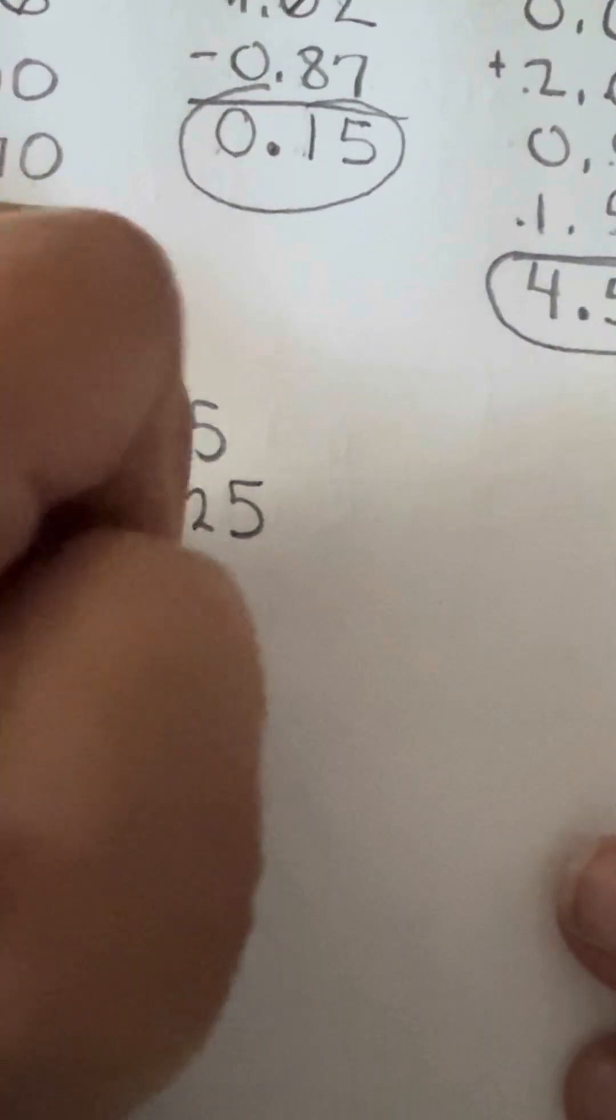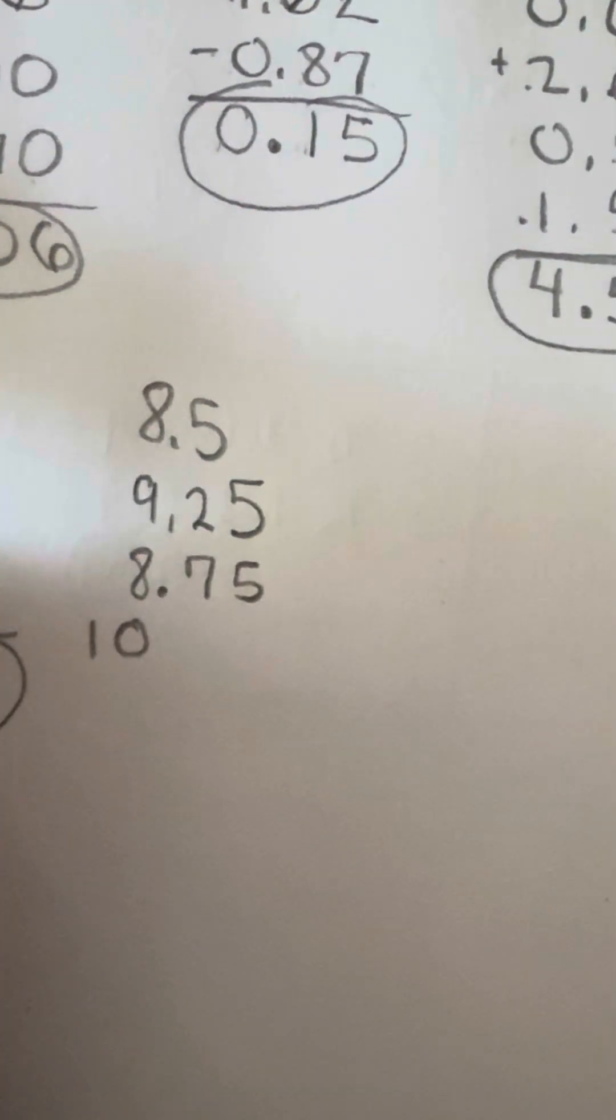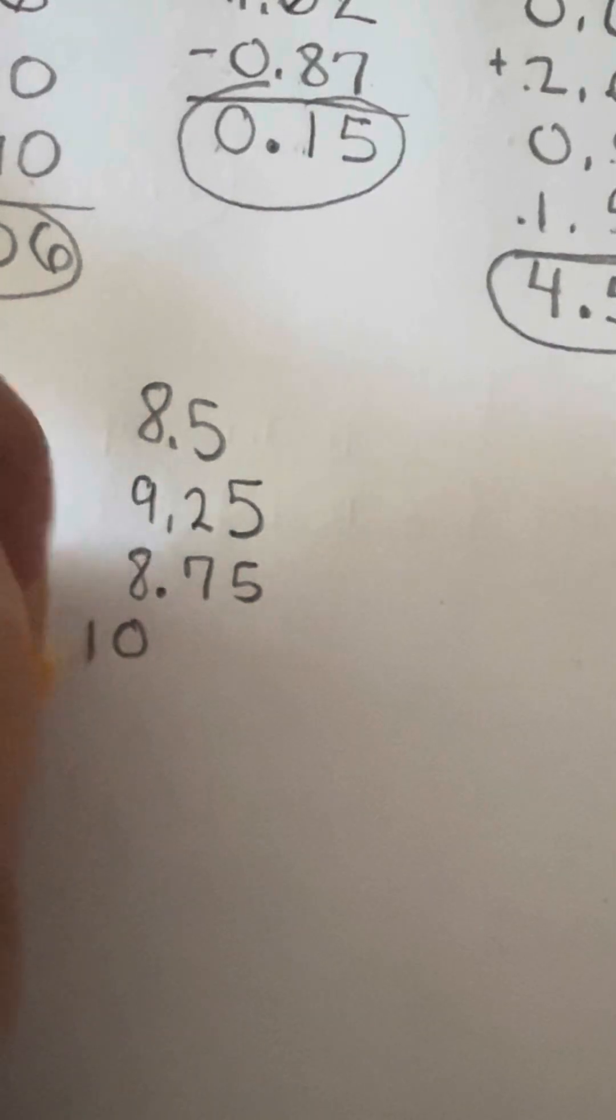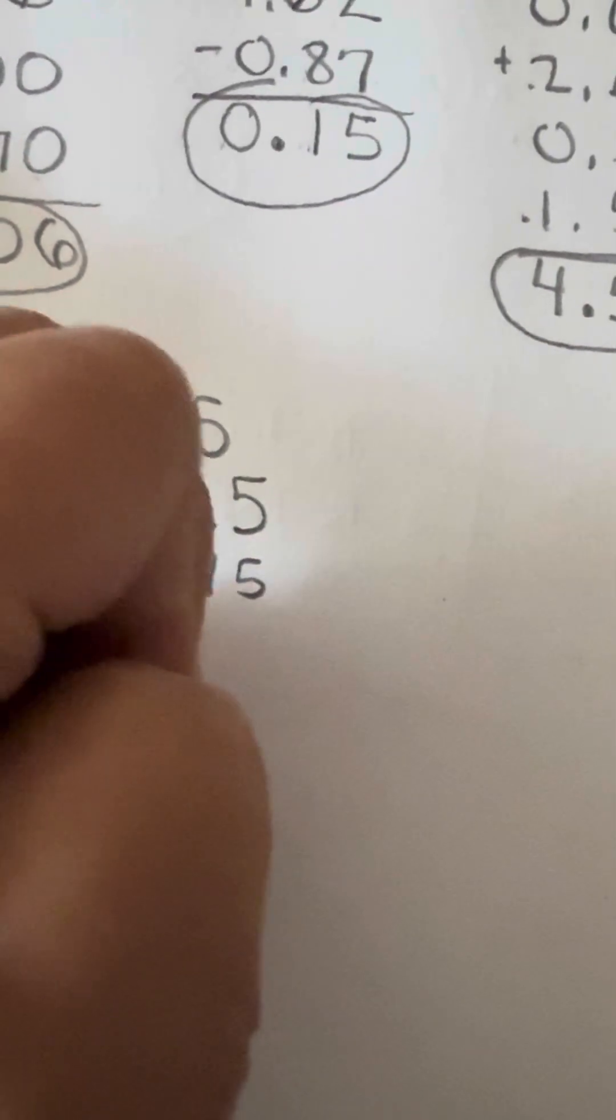Our next day was 8.75. And again, you want to keep these neat as much as possible. This is 10. So notice that I moved this over. This is the only one I have as a tens position. And then my last one, or the next day was off. And then our last one was 7.75.